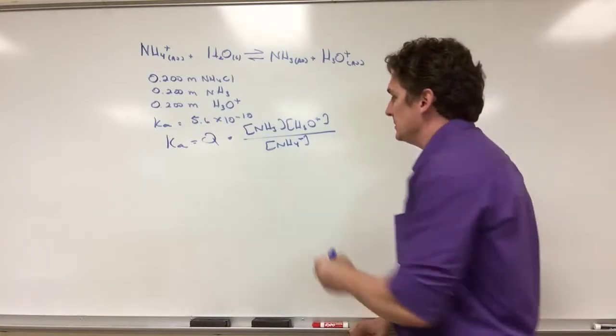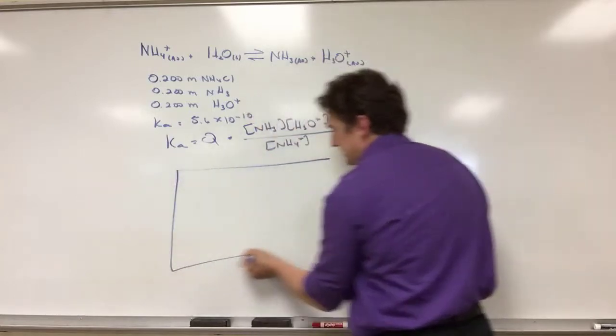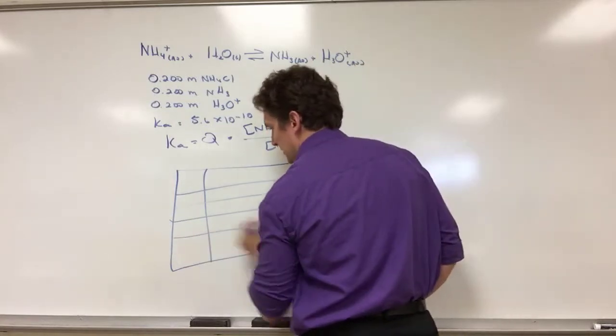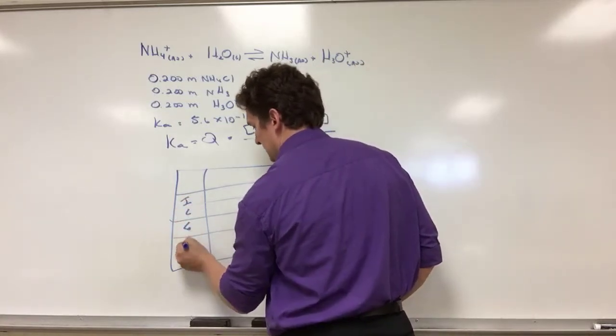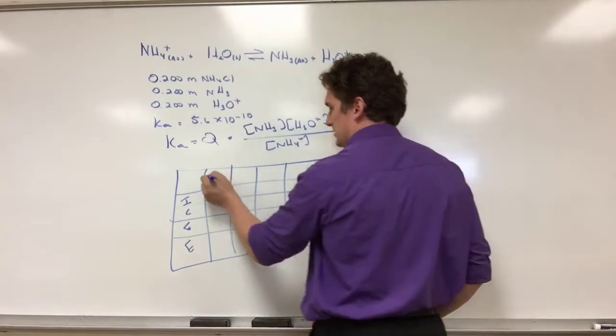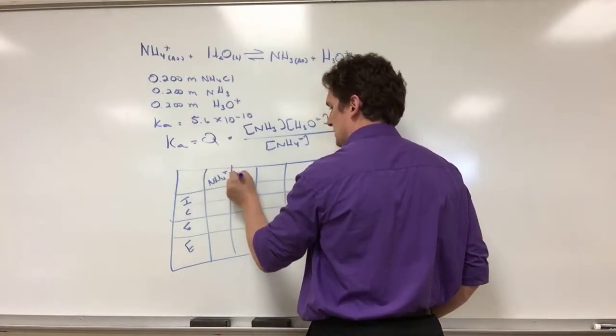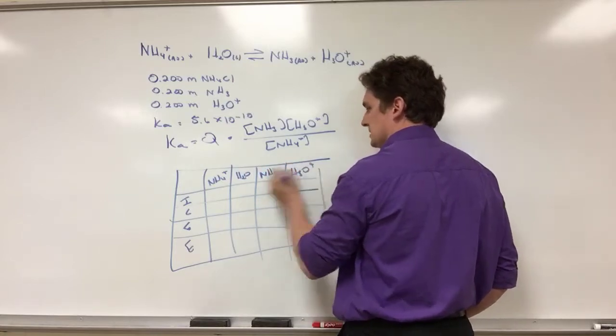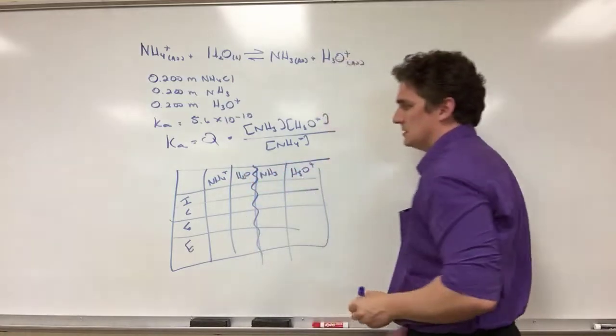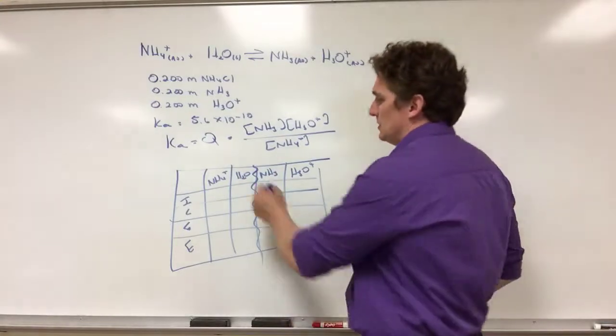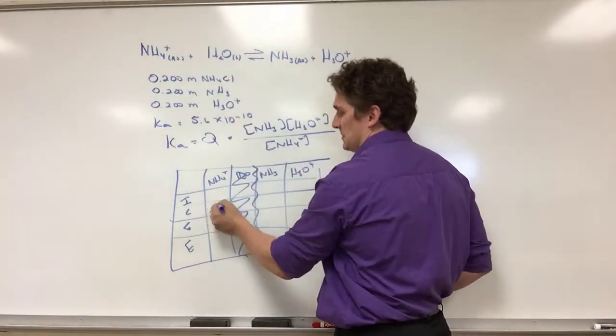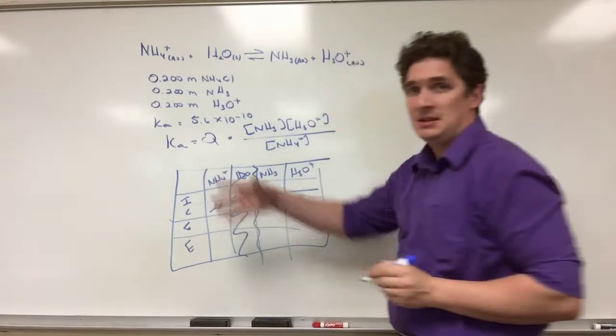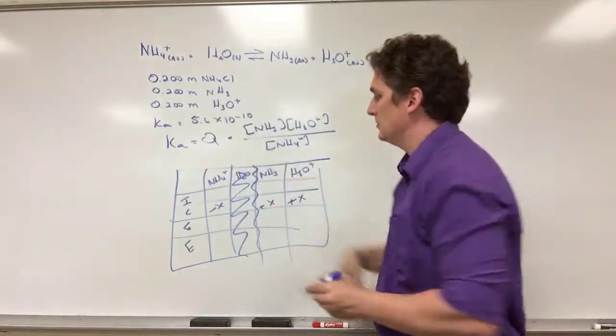So I've got NH4 plus, H2O, NH3, and H3O plus. Water is liquid, I don't need it for Q, so I'm just going to erase that column. I know the change in ammonium is minus X, change in ammonia is X, change in H3O plus is X, and I give them starting concentrations here, 0.2 molar for everything.